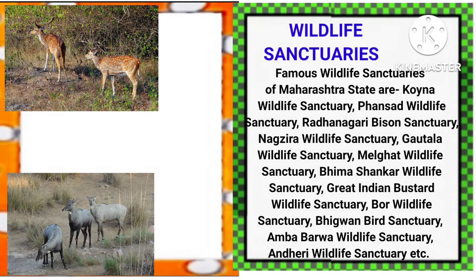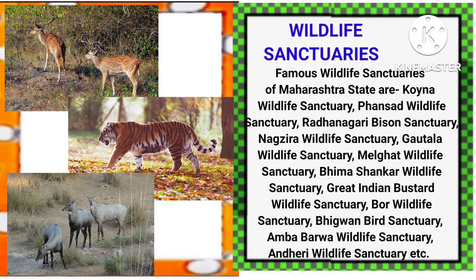Wildlife sanctuaries: Famous wildlife sanctuaries of Maharashtra state are Koina wildlife sanctuary, Fansad wildlife sanctuary, Radha Nagari Bisan sanctuary, Nagjira wildlife sanctuary, Gautala wildlife sanctuary, Melghat wildlife sanctuary, Bhima Shankar wildlife sanctuary, Great Indian Bustard wildlife sanctuary, Boar wildlife sanctuary, Bigwan bird sanctuary, Amba Barwa wildlife sanctuary, Andheri wildlife sanctuary etc. And here are some pictures of wildlife sanctuaries of Maharashtra state.